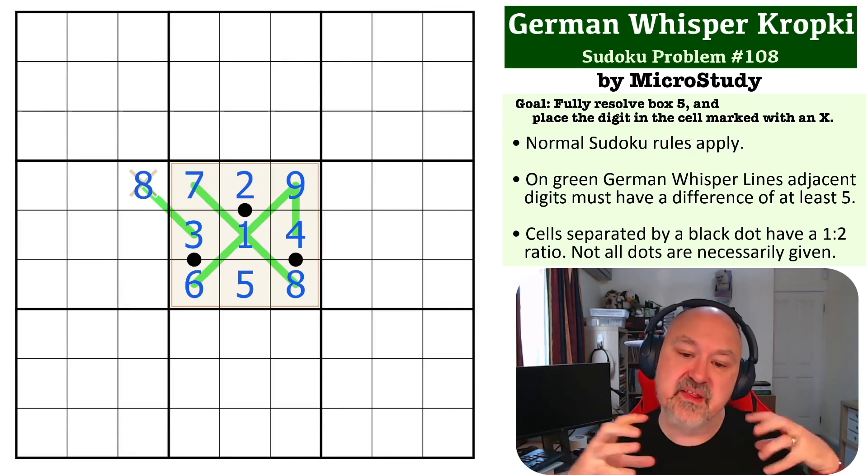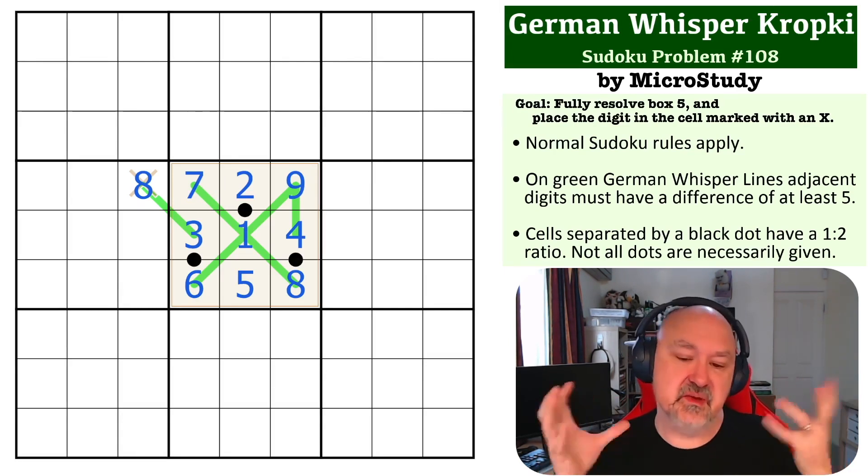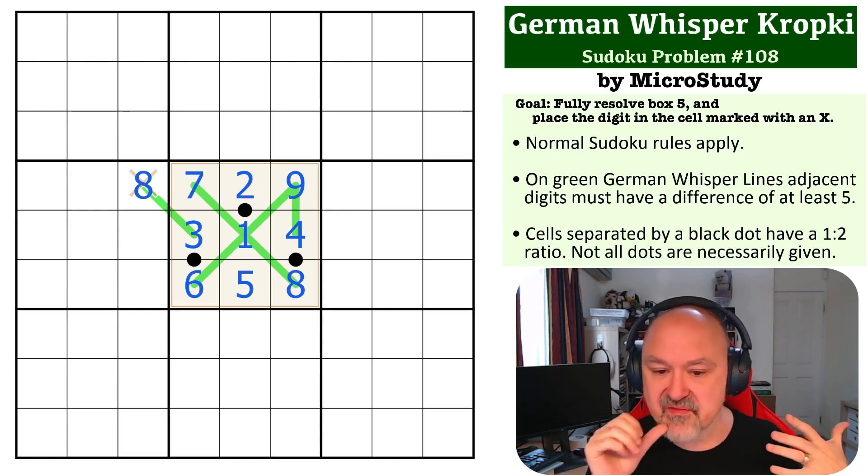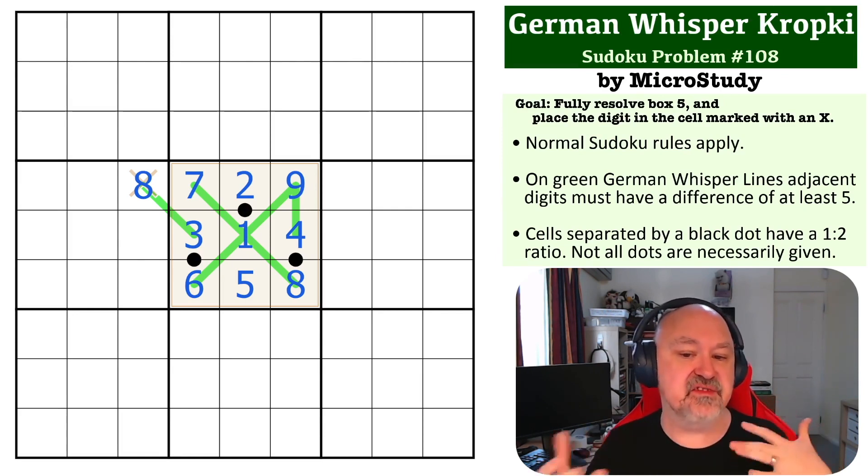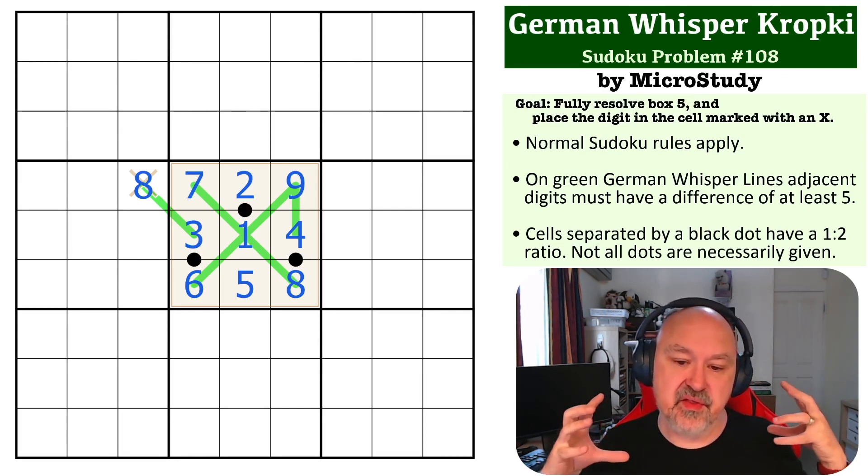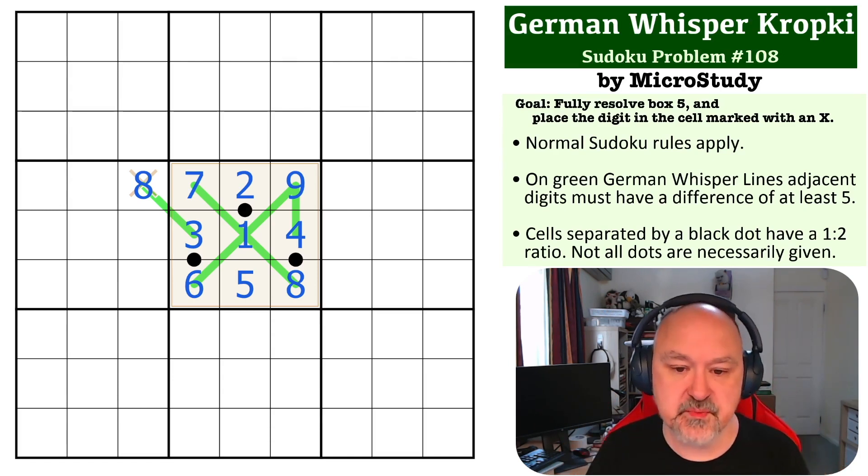I really like this one. It's everything working together quite tightly because it's all mostly happening in box 5. But it's a very, very tight constraint using a lot of the tricks that I really like. 5, 7, and 9 not being able to go on ratio dots and the pressure being caused by the whisper lines. I really like this one. I thought it was very, very cool.